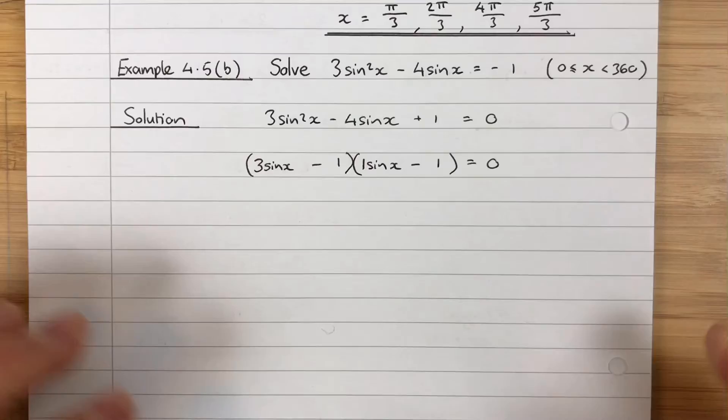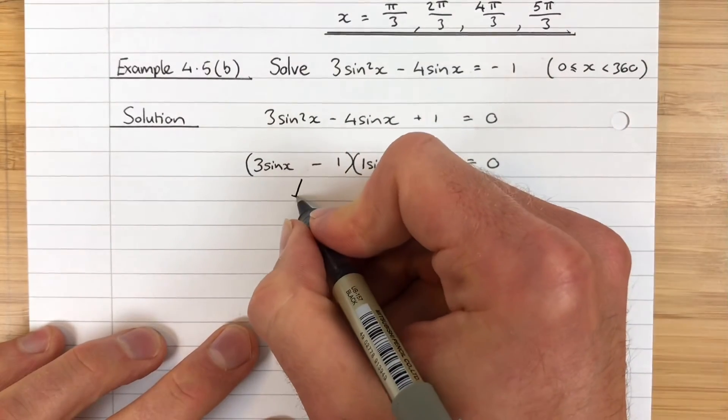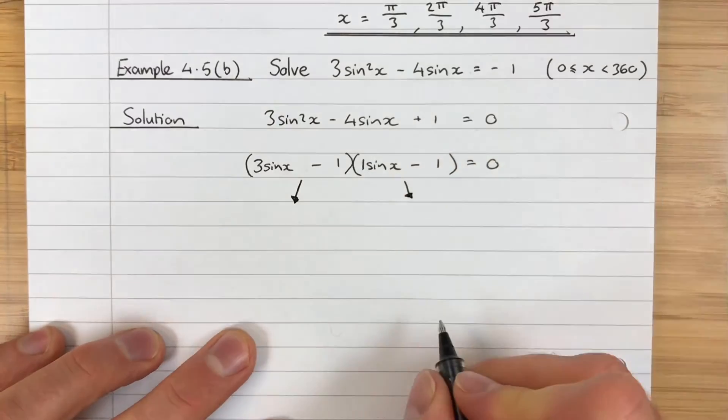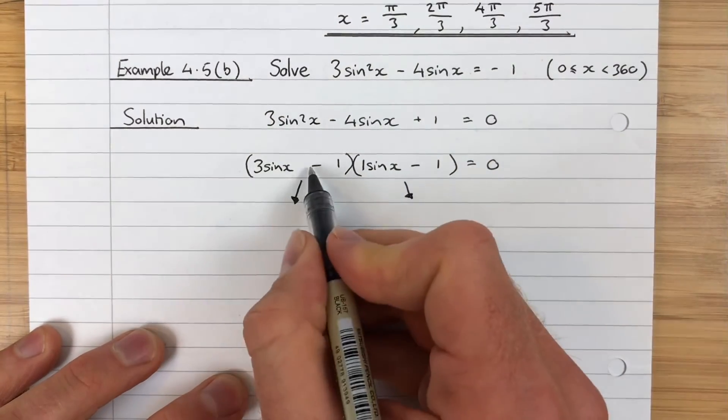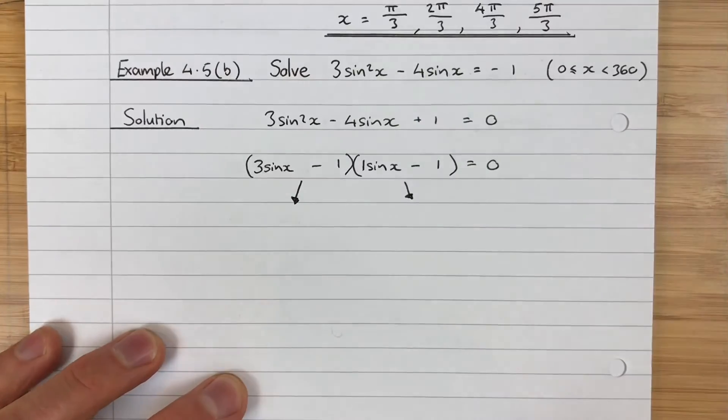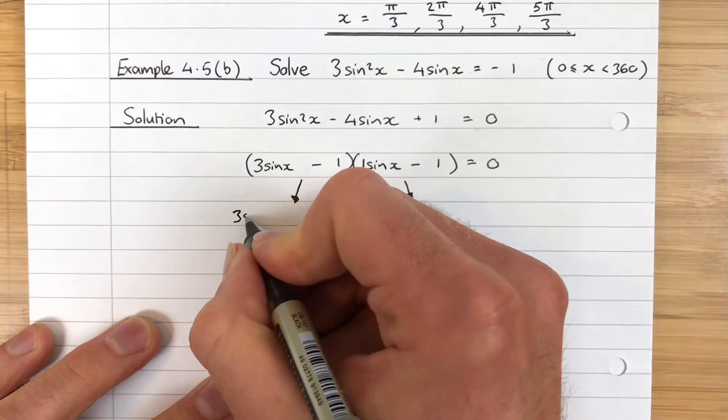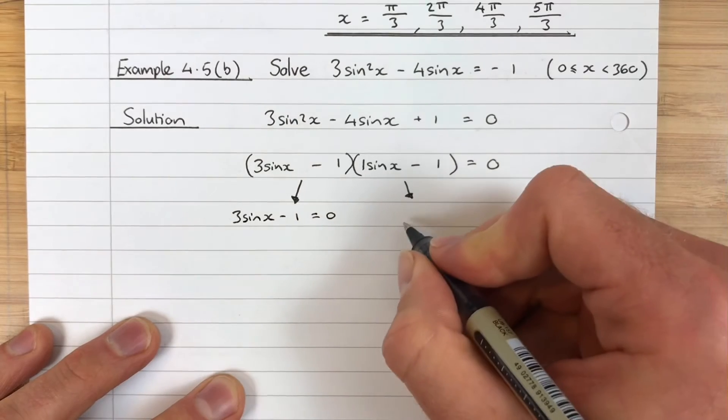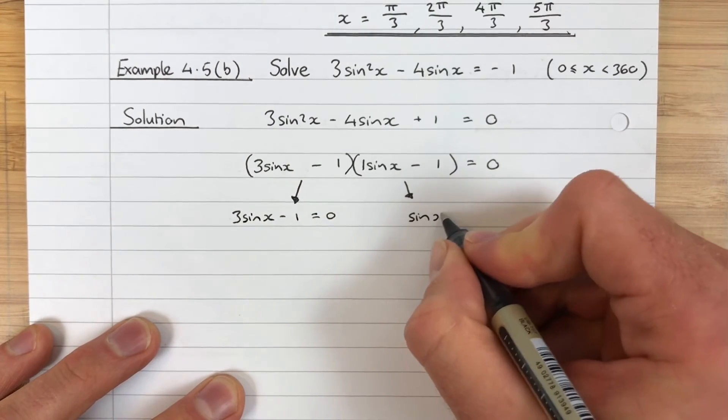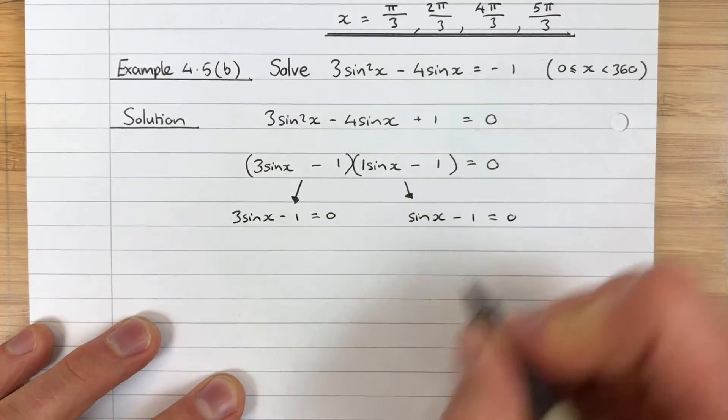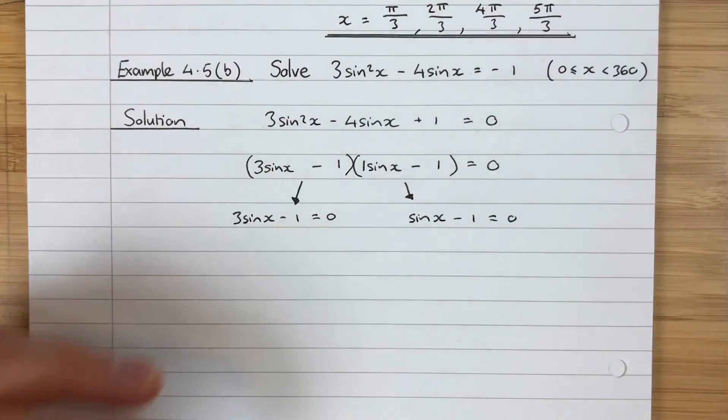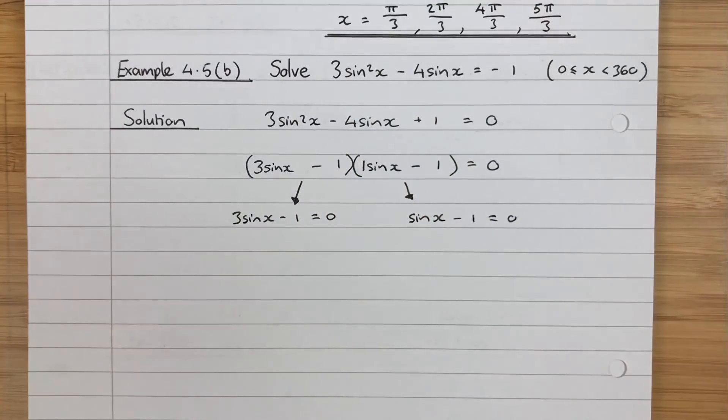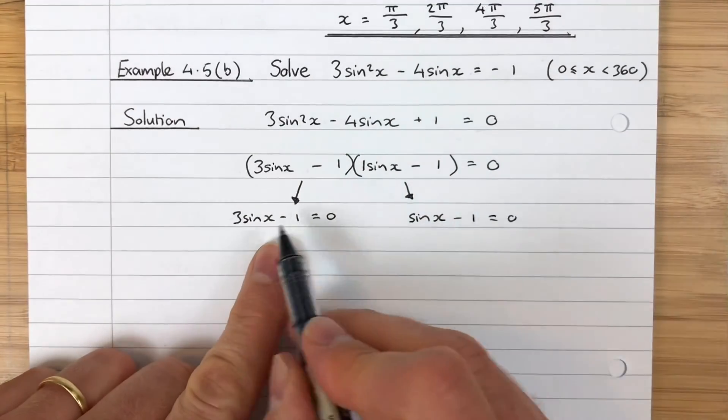Following the rules of solving quadratic equations then, we split and we solve. We say if this times this equals 0, then either this is 0 or this is 0. So either 3sin x - 1 = 0 or sin x - 1 = 0. We don't need to write this 1 here, that's redundant. So there are two possibilities to find solutions to this equation, and we have to solve these two things separately.